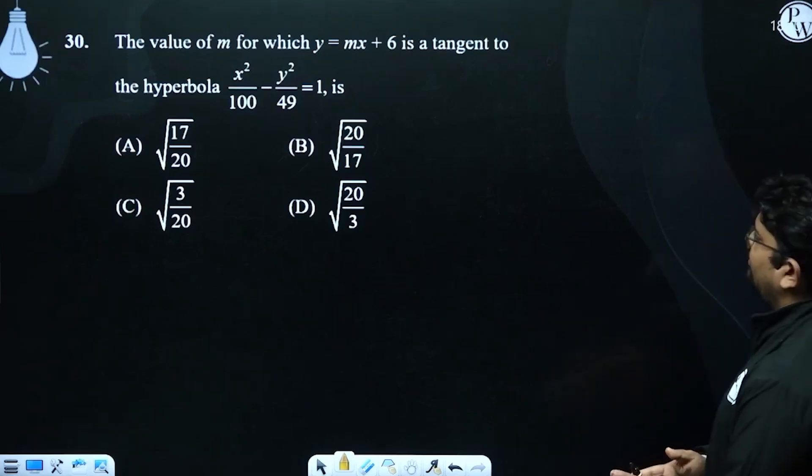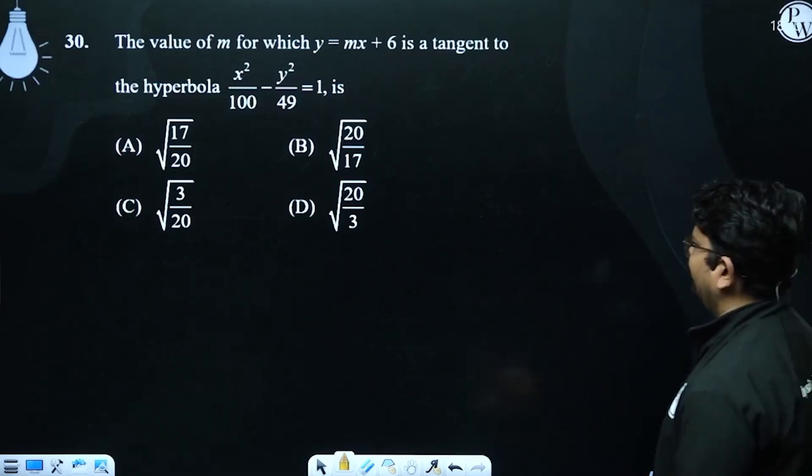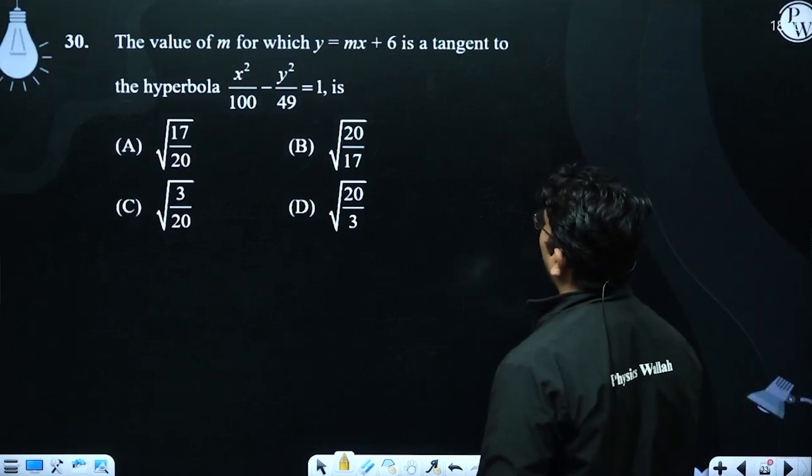The value of m for which the line is a tangent is the same question. This time you have to take a slope.